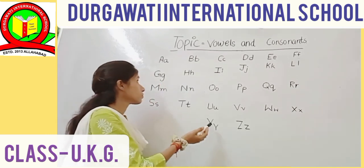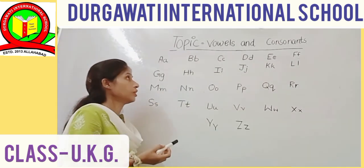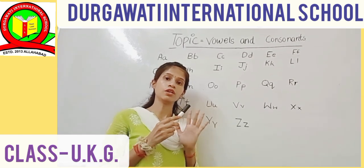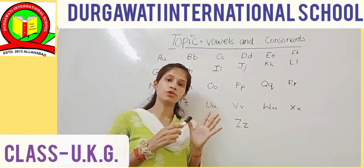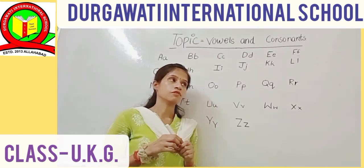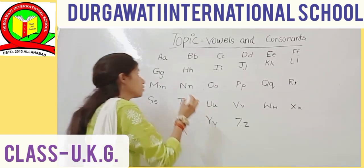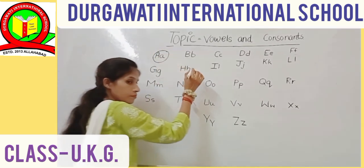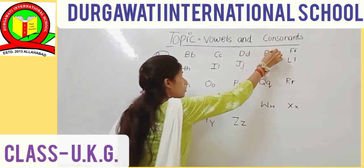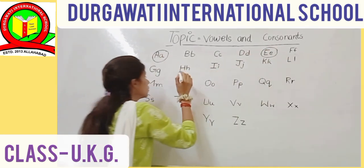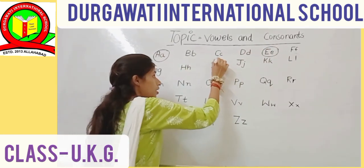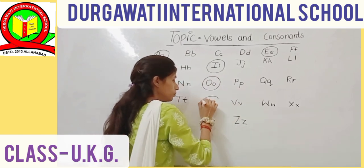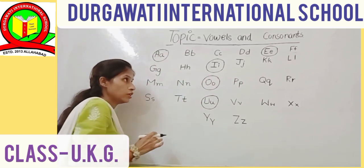So there are 5 vowels: A, E, I, O, U. So firstly we will circle the vowels here. A, E, I, O, U. These are vowels.